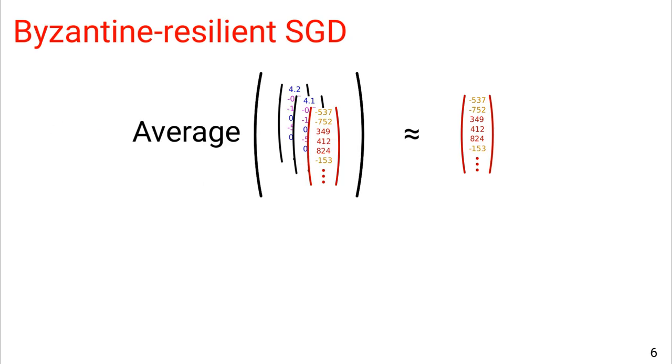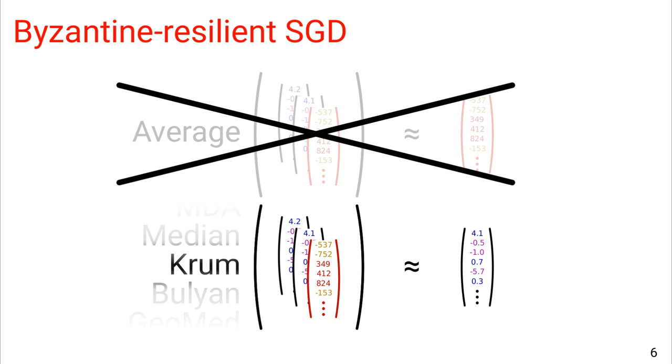The literature tackled this issue, for instance, by replacing the average, which is naturally sensible to outliers, by more statistically robust alternatives. These alternatives are called Byzantine Resilient Gradient Aggregation Rules, or as an acronym, Byzantine Resilient GARs. I leave you to the original papers for more information on each of these functions. Of course, our paper provides a review of this related work and reminds the formal guarantees these functions provide. We choose to use MDA in this work, mainly because its theoretical requirements are relatively easy to satisfy in practice.